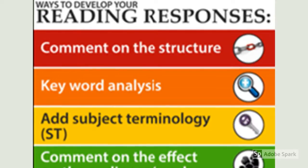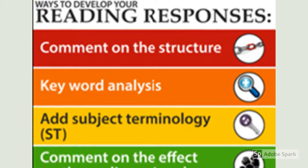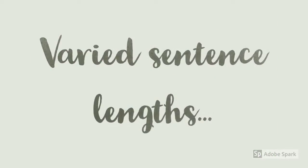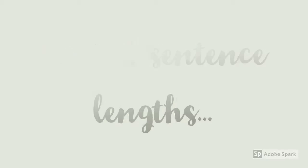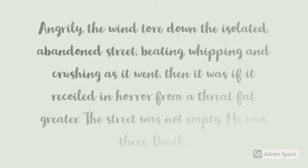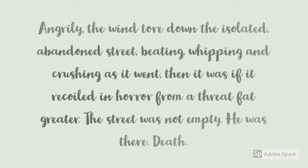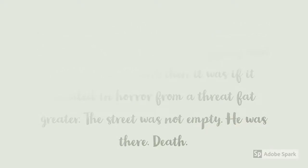The first strategy is to comment on the writer's use of structure. One way you can do this is by commenting on the writer's varied sentence lengths. Look at the text and identify if there's a list or if there's a complex sentence used. See if there's a shorter sentence — like a minor sentence or a one-word sentence — after it, and then consider why that is important, what is the effect of that, and what is the writer trying to make the reader feel.